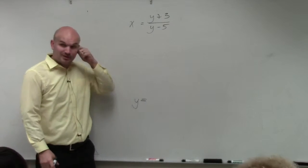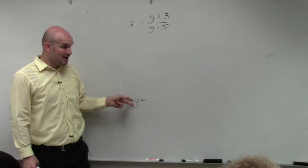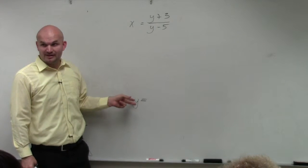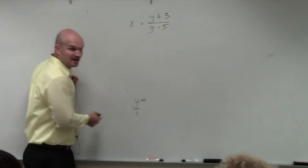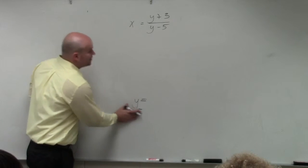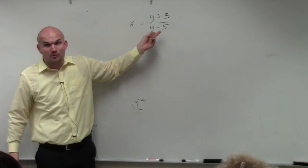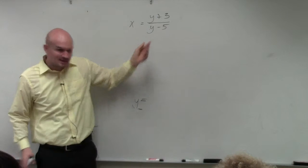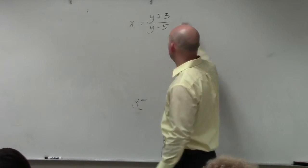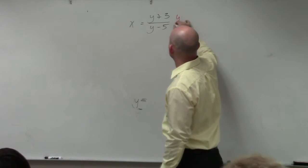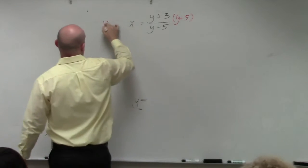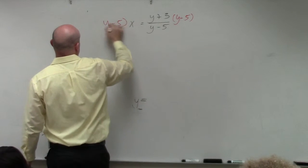When we look at this y, is this y in the denominator of anything? No, it's really technically in the numerator. It's like y over 1. So therefore, I can't solve for y when I have y in the denominator. So what I'm going to do is get rid of the y in the denominator. To do that, I'm going to multiply by y minus 5 on both sides.